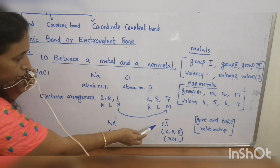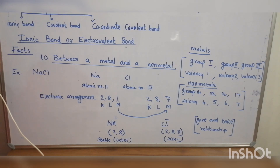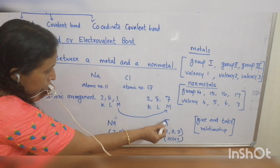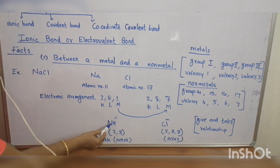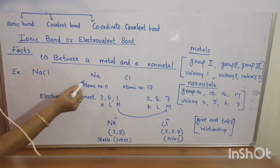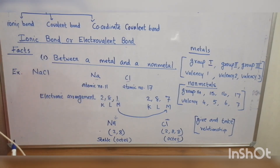If chlorine gains 1 electron, it is converted to a chloride anion. If an atom gains 1 electron, it is converted to a negatively charged ion. So, chlorine and sodium both gain 8 electrons in the outermost shell. The relationship between sodium and chlorine is like a give and take relationship.